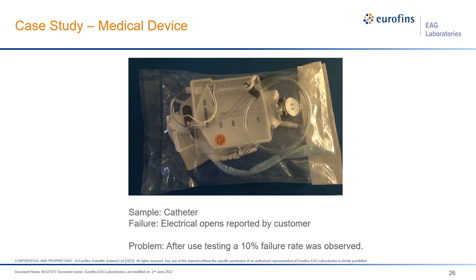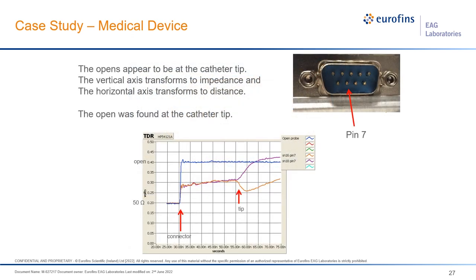The next case study involves a medical device — a catheter. This catheter had electrical opens reported by the customer, with about a 10% failure rate observed during testing. That failure rate was too high, and they wanted to figure out how to change their design to eliminate the issue. The first test we did was non-destructive time-domain reflectometry, where you put a pulse of current into the sample and look at the reflection. By comparing a good unit with a bad unit, we found that the reflection was occurring differently on the bad unit right at the tip of the part, so we knew where to investigate further.